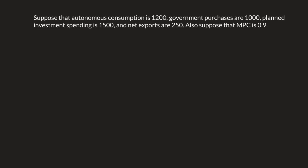What if you're given the information in a different format? So suppose that autonomous consumption is $1,200, government purchases are $1,000, planned investment spending is $1,500, and net exports are $250. Also suppose that the MPC is 0.9.